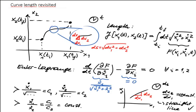So perhaps this is a slightly more complicated way of deriving the straight line result compared to the previous formulation, but you see that the formalism works. You can also phrase the problem as a functional of multiple functions — in this case two — and the extremization condition again leads to the correct expected result.